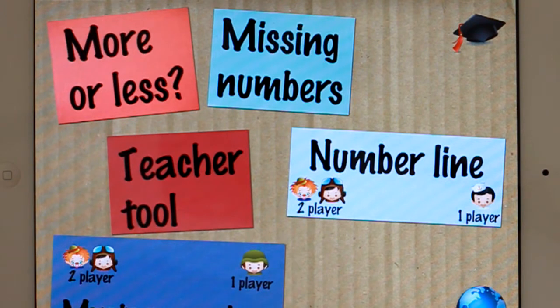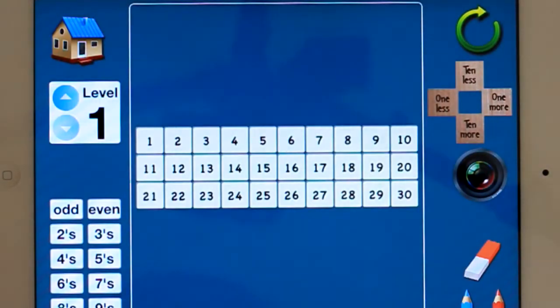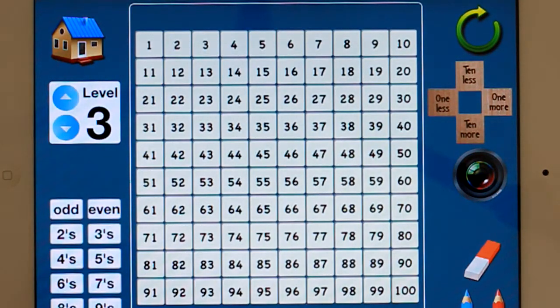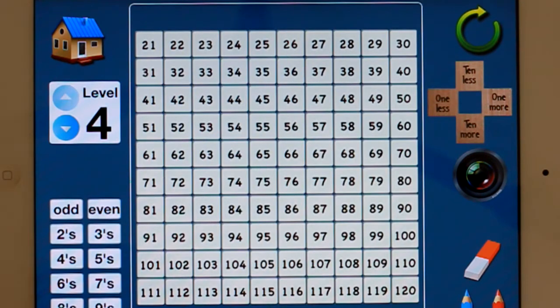Or a hundreds chart. So let's just have a quick look at the teacher tool. So the teacher tool is a hundreds chart, level 1 goes to 30, level 2 to 50, level 3 to 100, and then level 4 from 20 to 120.